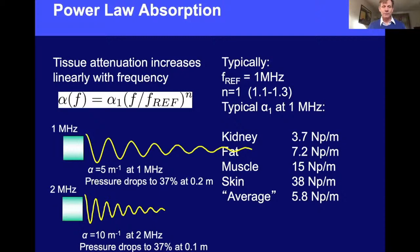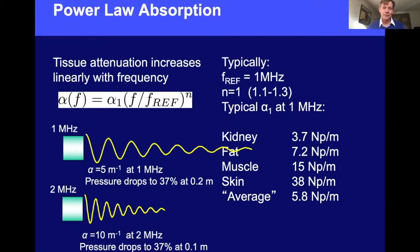Going higher in frequency means the signal decays more quickly. At one megahertz with alpha = 5 inverse meters, the pressure drops to 37% in 20 centimeters. At two megahertz, alpha doubles and pressure drops to 37% in just 10 centimeters. For imaging, this limits how far we can penetrate — high frequencies give a better image but don't allow deep penetration. In therapeutic ultrasound, the absorbed energy can be used for heating, but if all energy is absorbed before the target site, we can't get the desired therapeutic effect.